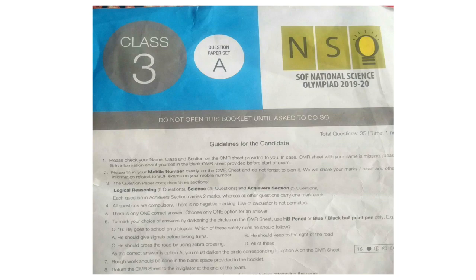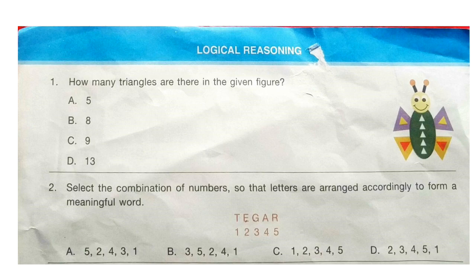Let's start with the first section: logical reasoning. Question 1: How many triangles are there in the given figure? Look at the figure, count the number of triangles and select your answer. The correct answer is option C — 9. Most students get confused and count the outer wing as a triangle and say the answer is 13.